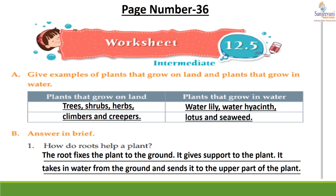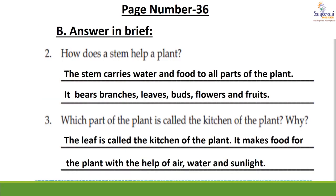Children, now comes to B part — answer in brief. Question 1: How do roots help a plant? Answer: the root fixes the plant to the ground, gives support to the plant, and takes in water from the ground and sends it to the upper part of the plant. Question 2: How does a stem help a plant? Answer: the stem carries water and food to all parts of the plant; it bears branches, leaves, buds, flowers, and fruits. Question 3: Which part of the plant is called the kitchen of the plant, and why? Answer: the leaf is called the kitchen of the plant — it makes food for the plant with the help of air, water, and sunlight.